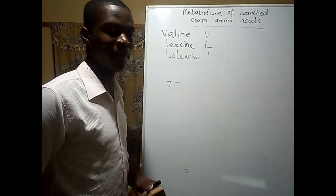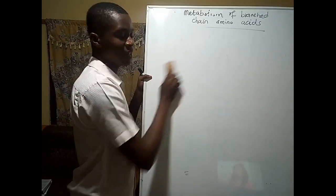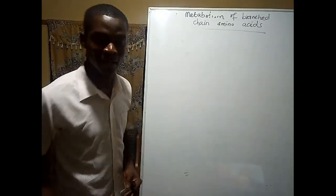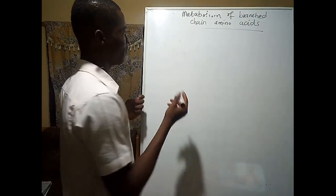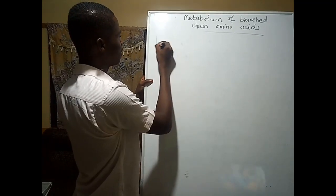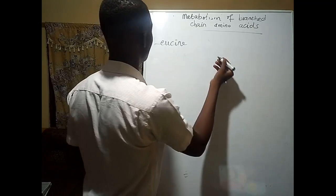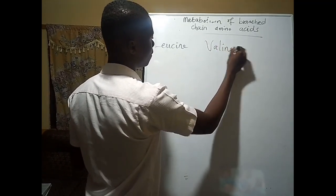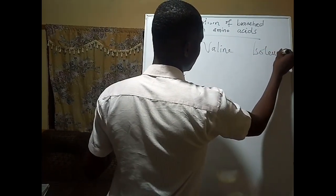At the end of this first series I'm going to talk about some clinical correlations of deficiencies of some of these important branching amino acids. We are going to look first at leucine, then at valine and isoleucine.